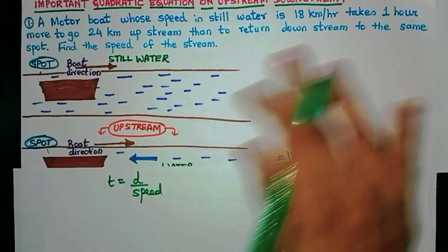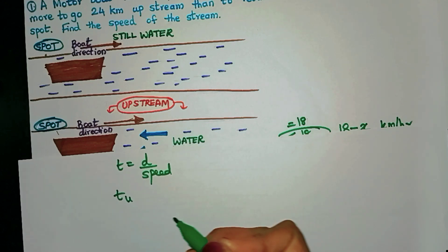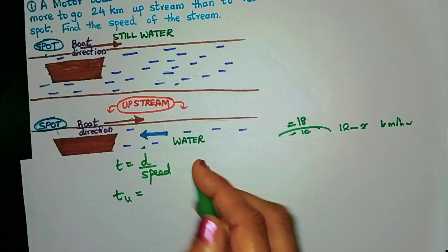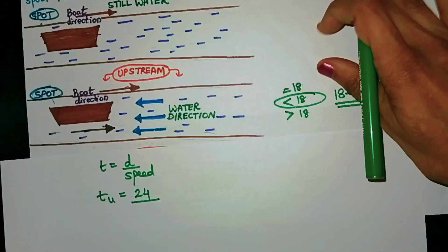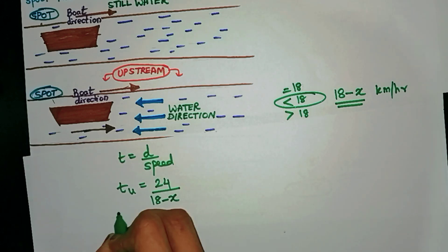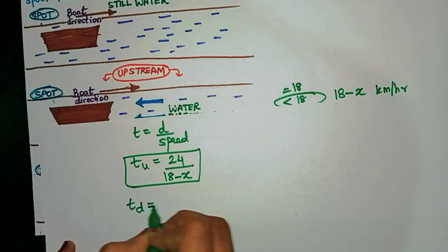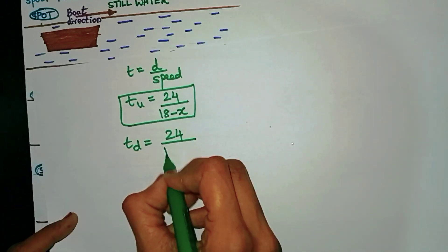Let's see what is the upstream time. The upstream time, I refer to as tu, will be the distance—the distance is always the same, it is 24 kilometers—divided by the upstream speed. We just found out it's 18 minus x. This is the upstream time. The downstream time will be again 24 but now the speed will be 18 plus x.